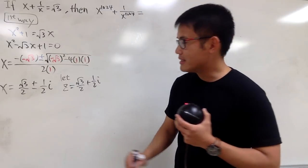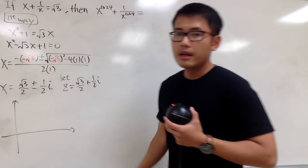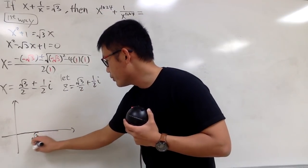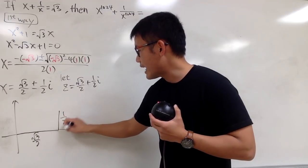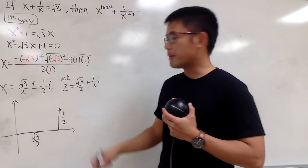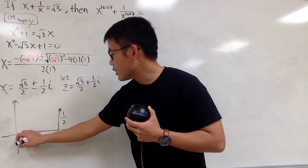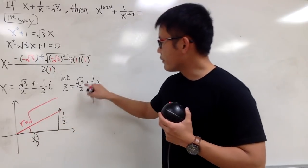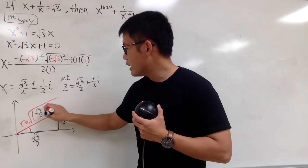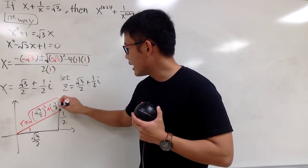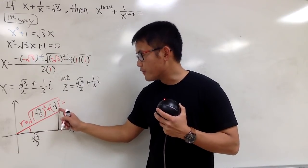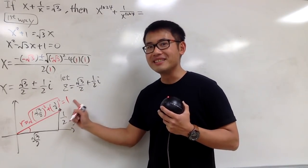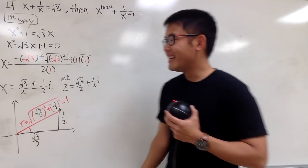Let's change z into polar form by looking at the complex plane. The real part is square root of 3 over 2 and the imaginary part is 1/2. For r, we take the square root of (√3/2)² plus (1/2)², which equals square root of 3/4 plus 1/4 equals square root of 1, which is 1. So this complex number lies on the unit circle! The angle corresponds to a 30-60-90 triangle, so θ is pi over 6.